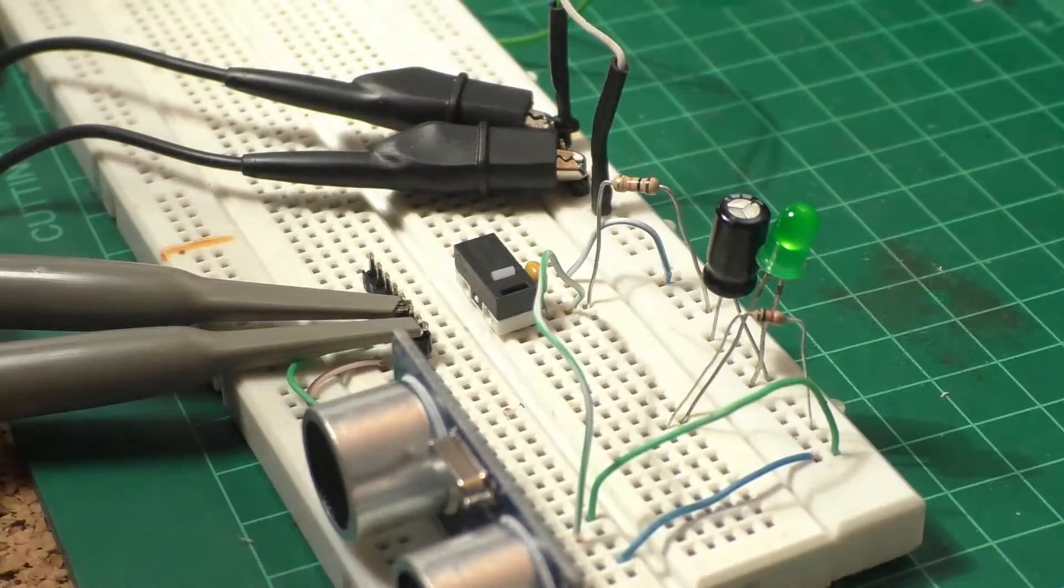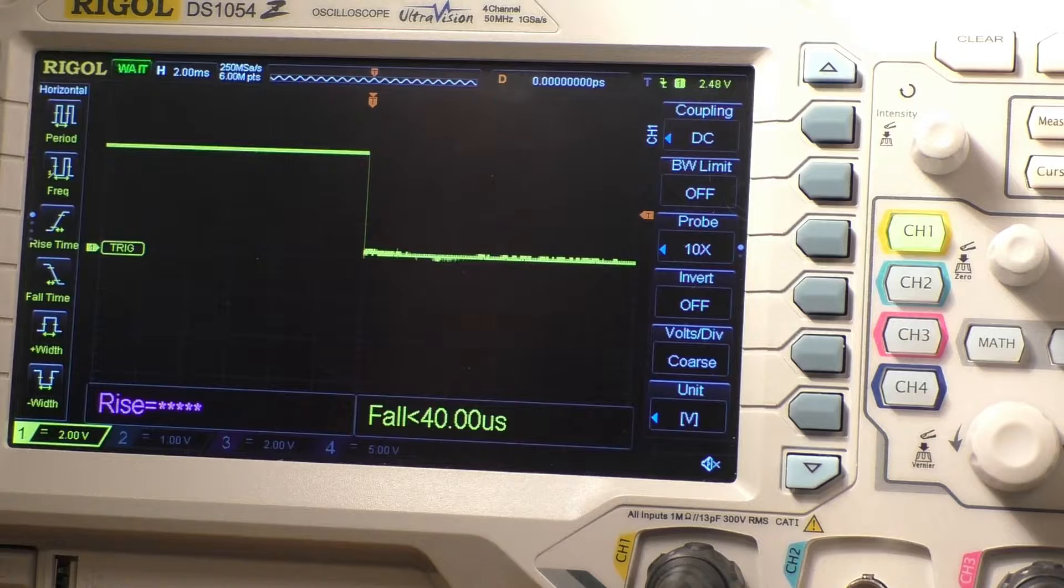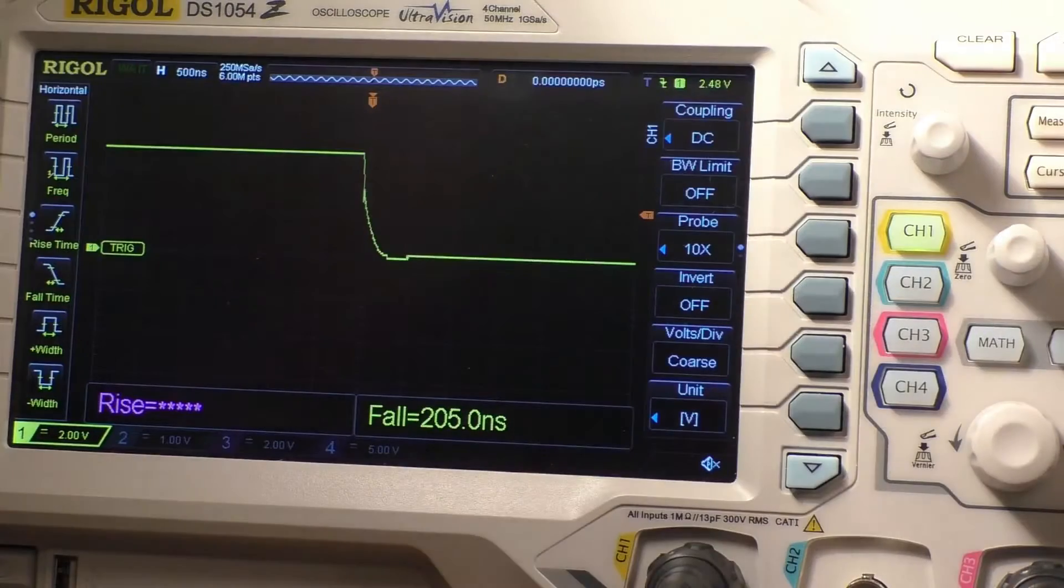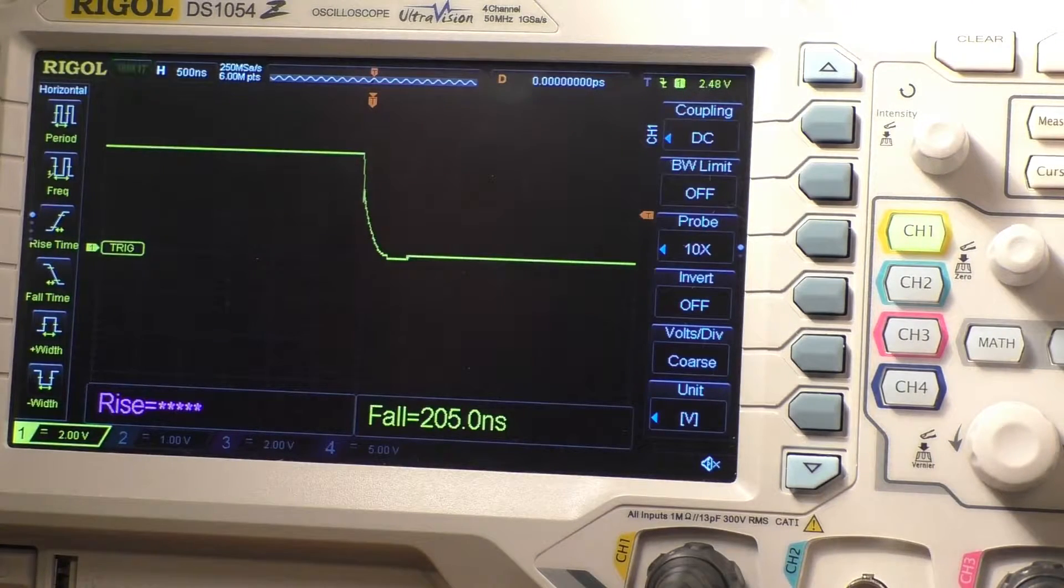And when I press this button, on the oscilloscope we can see a really nice falling edge here from 5 volts to 0 with a very short falling time of around 200 nanoseconds. So that's a very nice falling edge. Nothing to complain whatsoever.